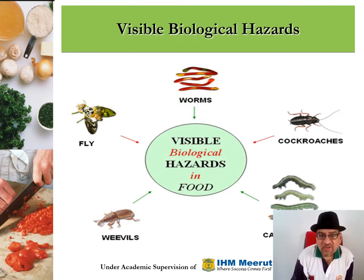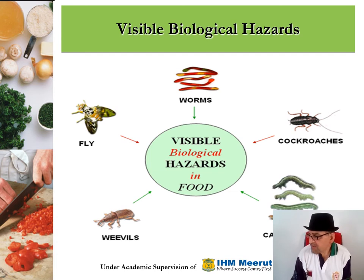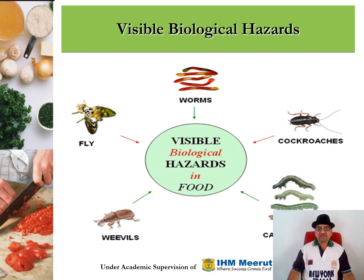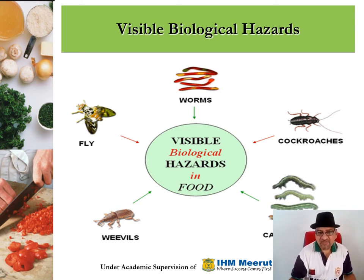Visible biological hazards are biological hazards which you can see, such as worms, flies, weevils or ticks, cockroaches, and different kinds of insects.